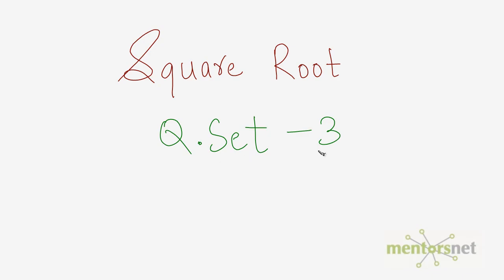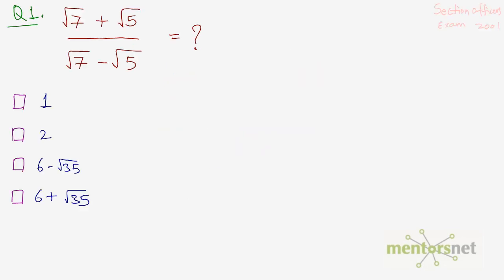This is the third question set on square roots. Let us go ahead with our first question: (√7 + √5) divided by (√7 - √5).